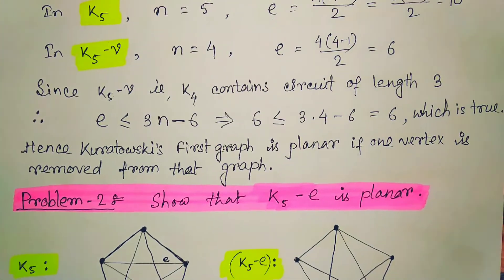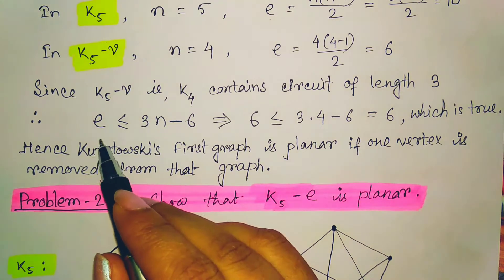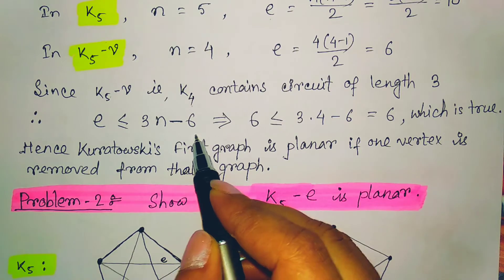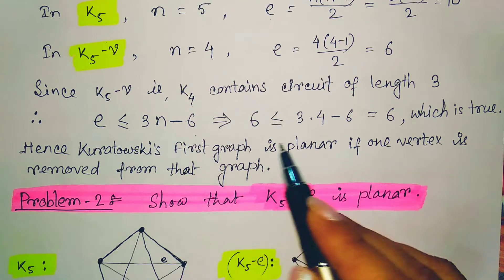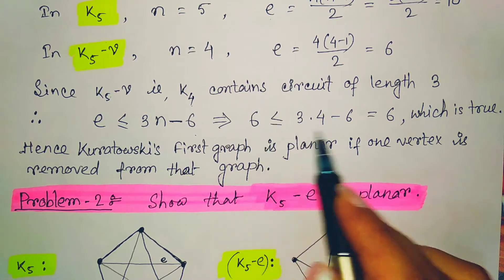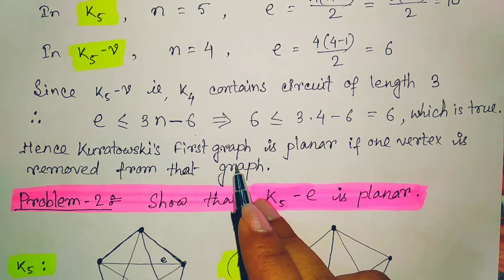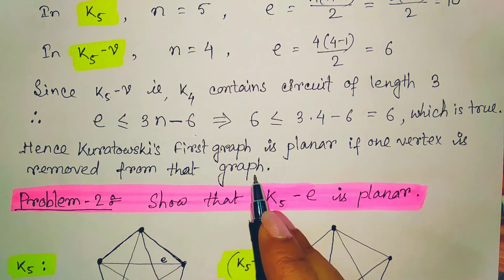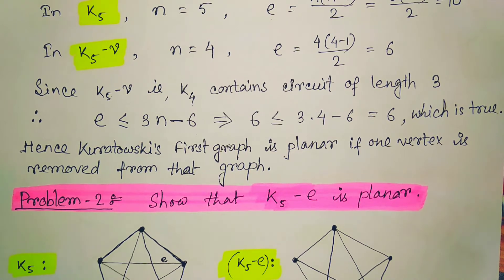We apply Theorem 3 for the planar graph from our previous video: E ≤ 3N − 6. Substituting the values for the reduced graph gives 6 ≤ 6, which is true. Hence Kuratowski's first graph is planar if one vertex is removed from it.